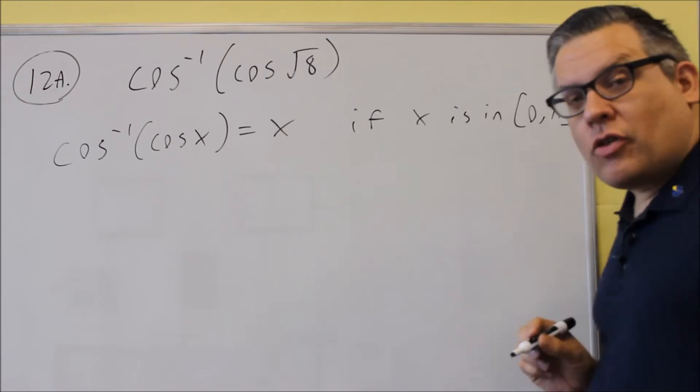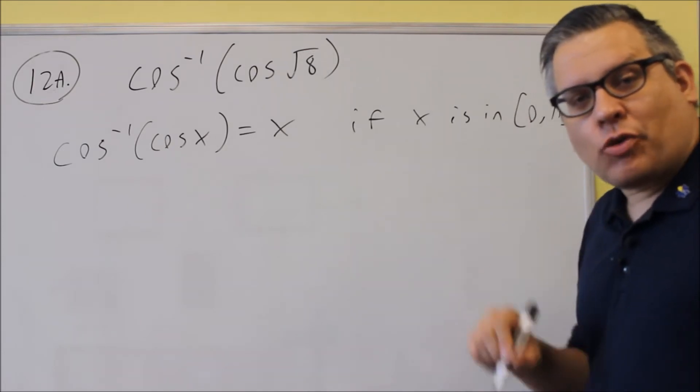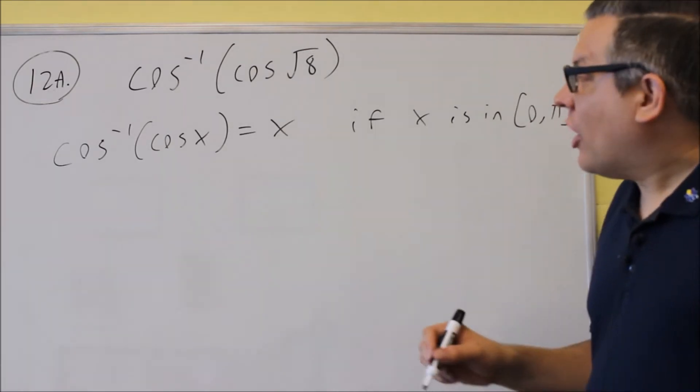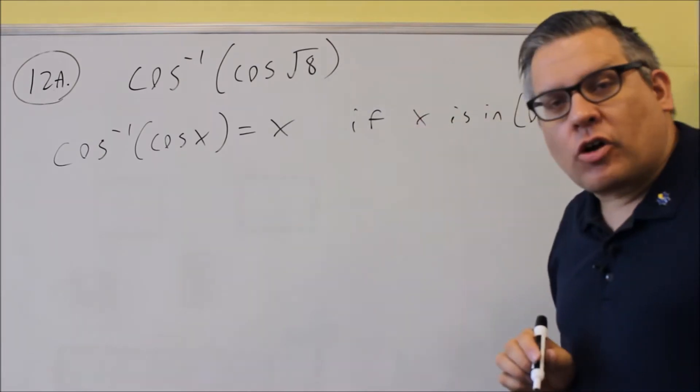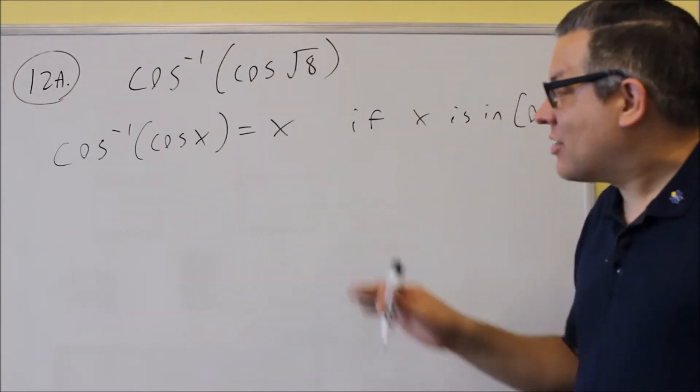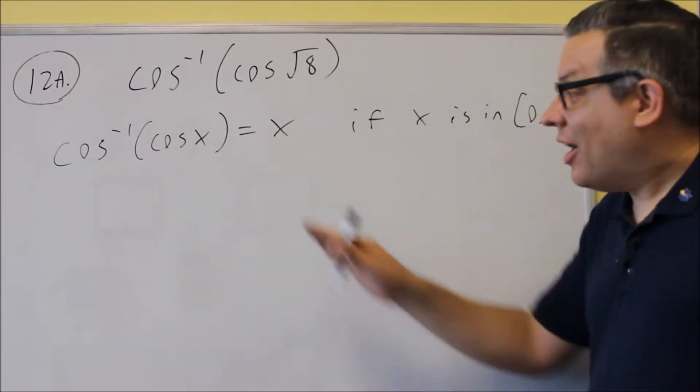The numerical value of π is 3.14. So all I have to do is figure out what the numerical value of square root of 8 is, and that will tell me whether or not this is true.